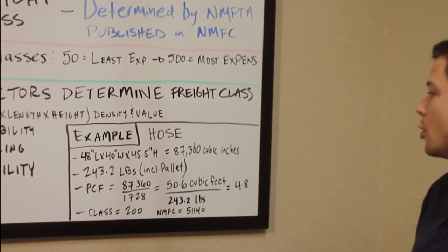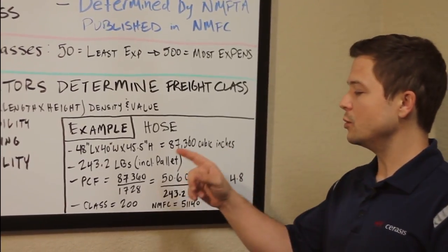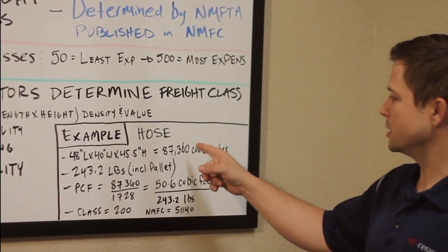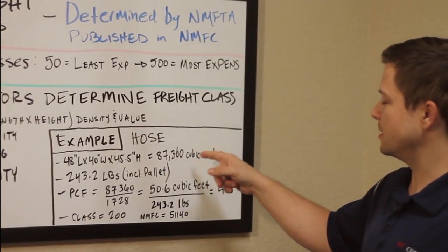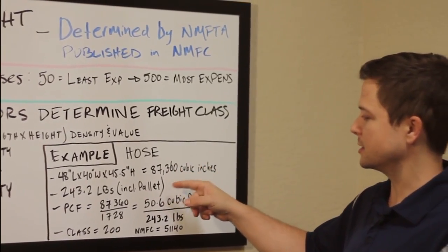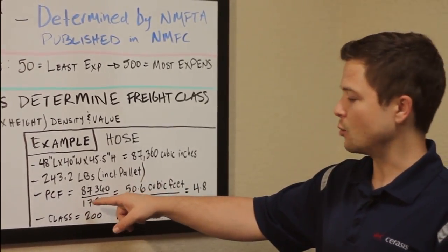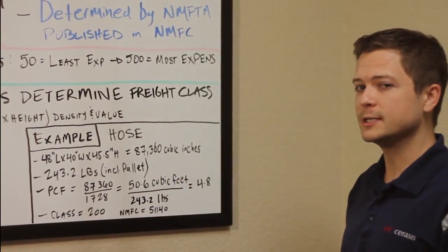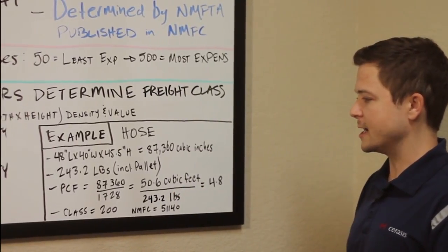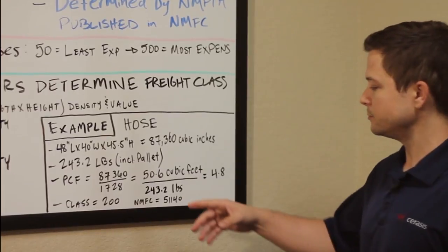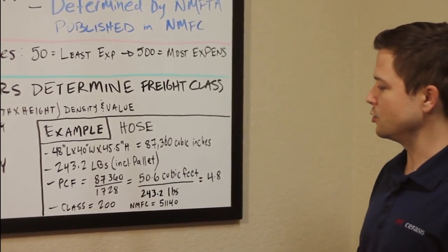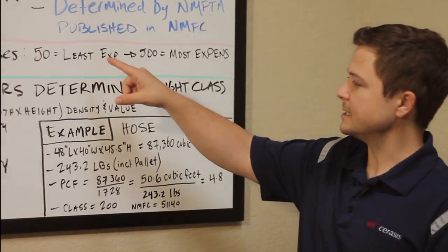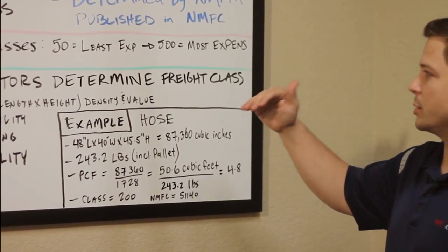Now we want to determine the PCF, or pounds per cubic feet. We take the length times width times height in cubic inches — 87,360 — and divide by 1,728 to get cubic feet, which gives us 50.6 cubic feet. Now we need to divide the weight to find the pounds per cubic feet: 50.6 cubic feet divided by 243.2 pounds gives us 4.8 PCF. Of those 18 classes, they are determined based on PCF.